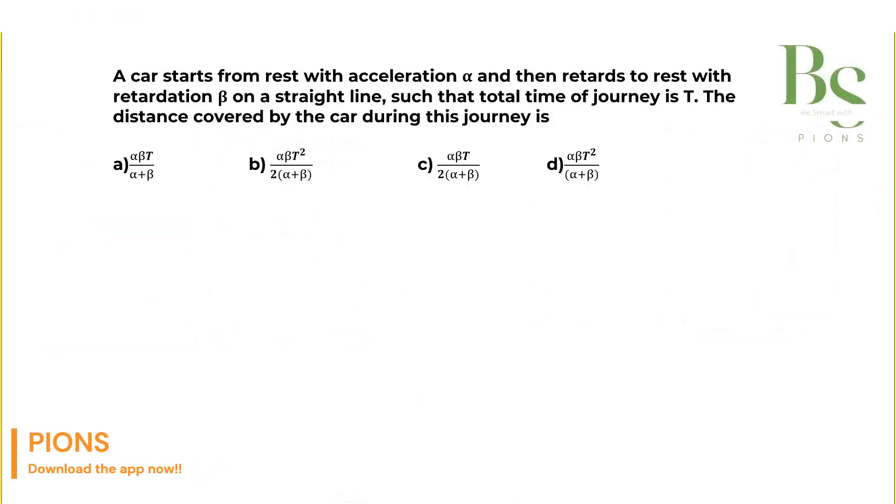A car starts from rest with acceleration alpha and then retards to rest with retardation beta on a straight line, such that the total time of the journey is capital T. The distance covered by the car during this journey you have to find.